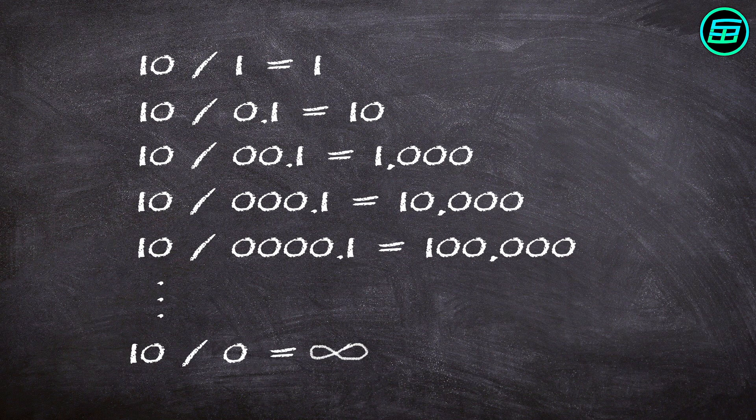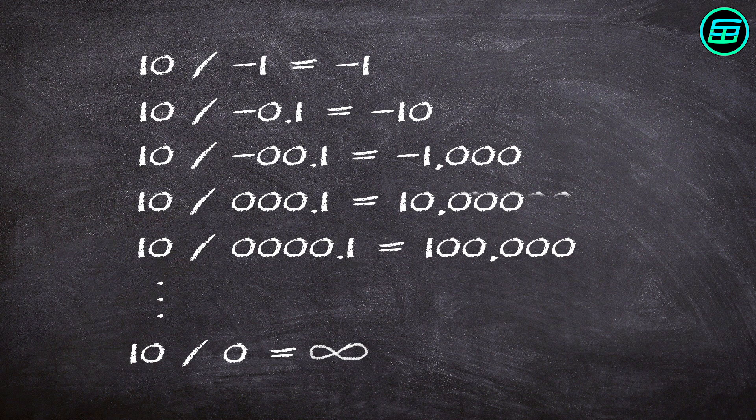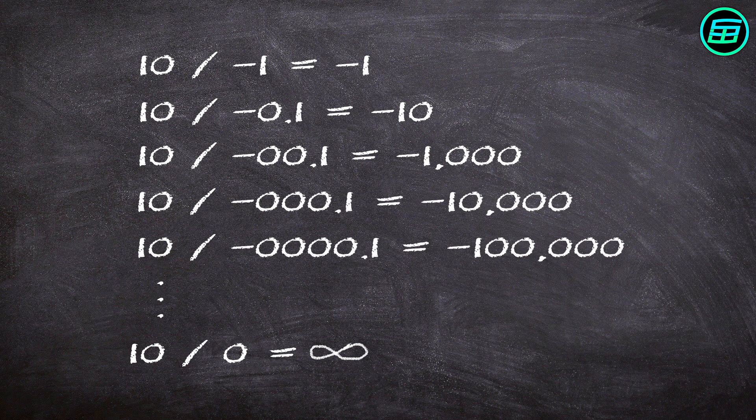But if you divide 10 by negative numbers that get closer and closer to zero, the result is increasingly large negative numbers. Approaching zero from the negative side then might lead you to conclude that 10 divided by zero is negative infinity.